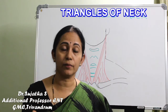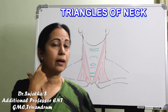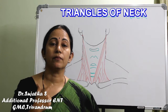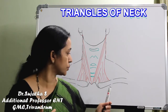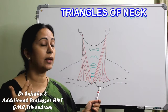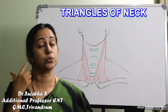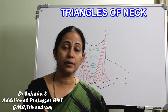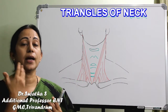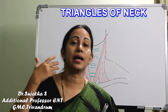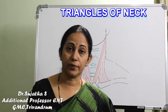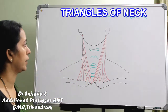The sternocleidomastoid also originates from the lateral half of the superior nuchal line and attaches by two heads: a sternal head attaching to the manubrium sternum and a clavicular head attaching to the clavicle. This muscle divides the neck into an anterior compartment and a posterior compartment, which is further divided into different triangles of the neck.